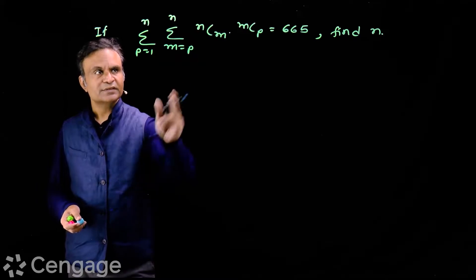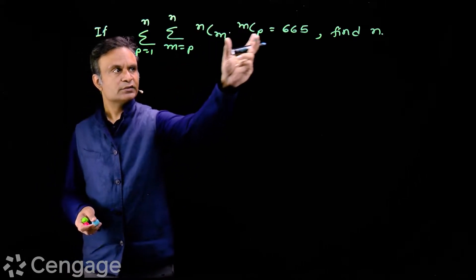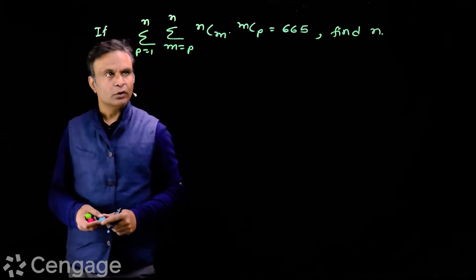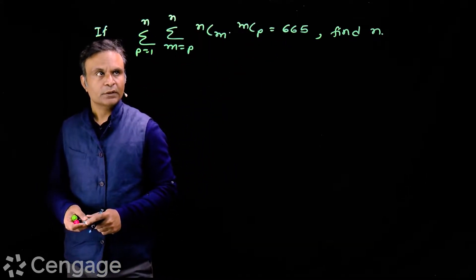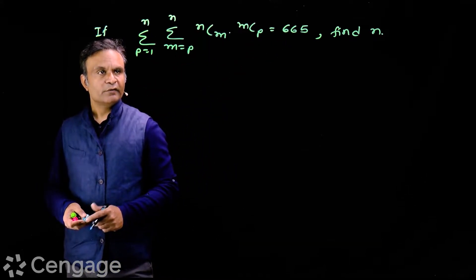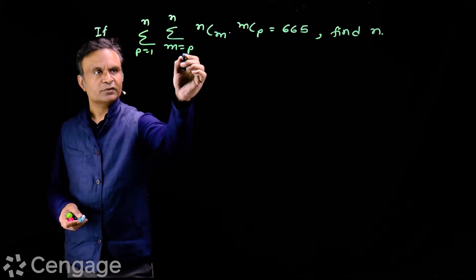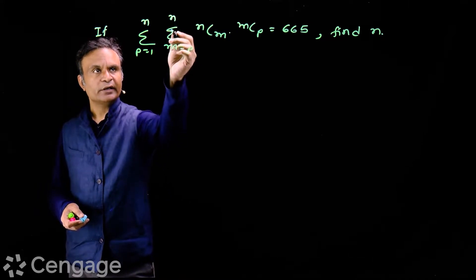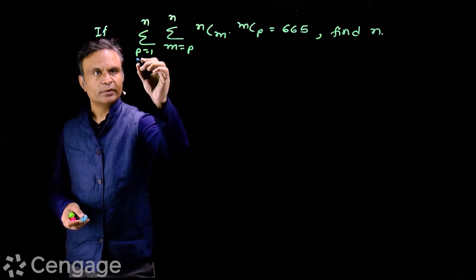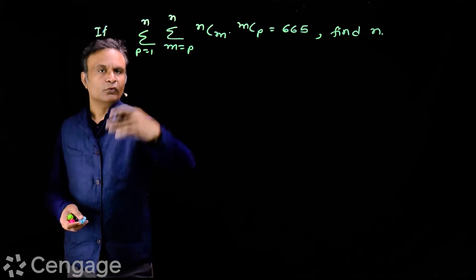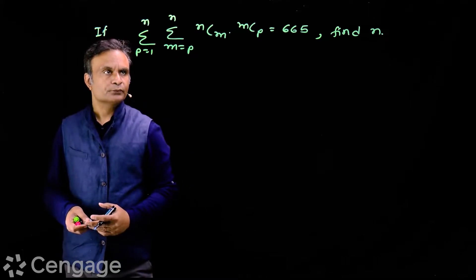We have this question: if this sigma is 665, then find the value of n. Here we have first sigma for m equal to p to n, and then we have sigma for p equal to 1 to n.